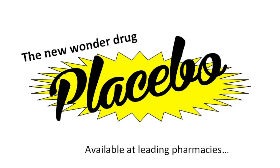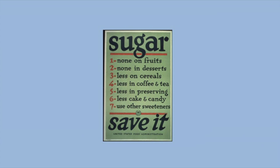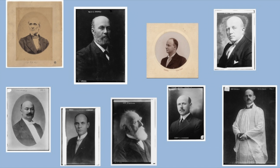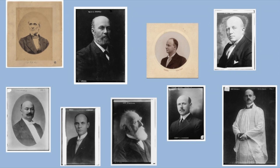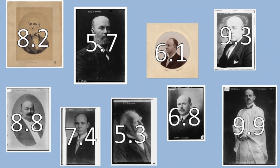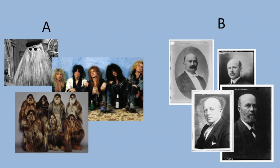A placebo is something that looks like the real treatment, but does in fact have no effect. So in this case we'll use a sugar pill. You don't tell the people which group they are in, and then you measure both groups at the end of the predetermined period. You compare the members of both groups, and today we are looking at how bald they are.